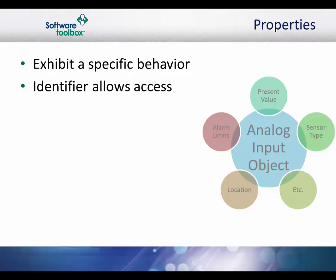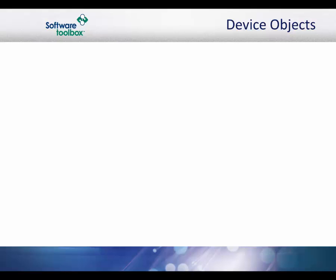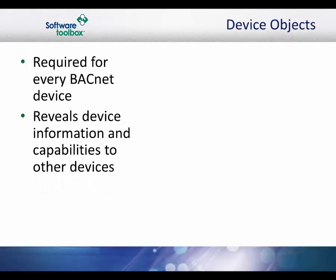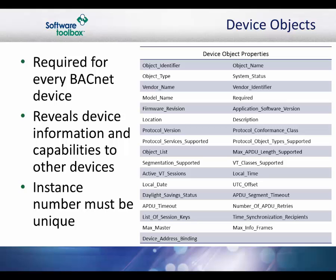Here is a list of the defined properties of the analog input object. BACnet requires one device object to be present in every BACnet device. The device object makes information about the device and its capabilities available to other devices on the network. Before one BACnet device starts control-related communications with another, it needs to obtain some of the information presented by the other device's device object. Here are some example properties of a device object. Unlike other objects, the device object's instance number must be unique across the entire BACnet network because it is used uniquely to identify the BACnet devices.